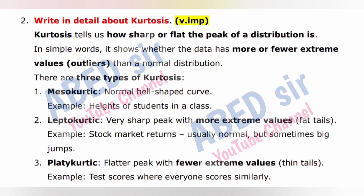Example of mesokurtic: heights of students in a class. Type 2: Leptokurtic — very sharp peak with more extreme values and fat tails. Example: stock market returns — usually normal but sometimes big jumps. Type 3: Platykurtic — flatter peak with fewer extreme values and thin tails. Example: test scores where everyone scores similarly.